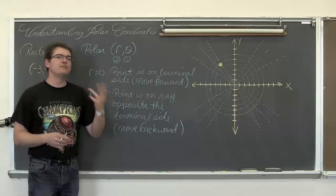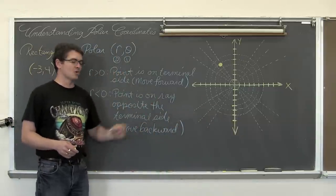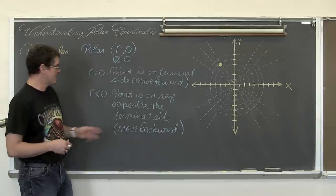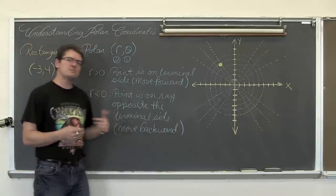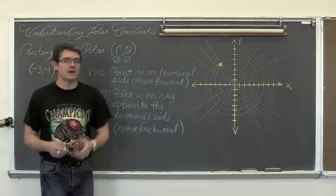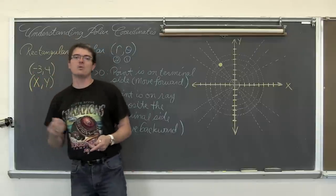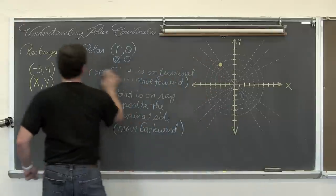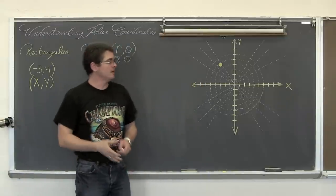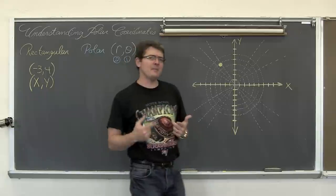I like to just say: just move forward. If you do your rotation first, just move forward if your radius is positive. If r is less than zero, then your point is on a ray opposite the terminal side. So I would like to say that if your r value is negative or less than zero, just move backwards. We need to identify an r and a theta value for the point negative 3, 4, which is a rectangular coordinate or an xy coordinate. All we are doing with the polar system is describing another way to get to that coordinate.